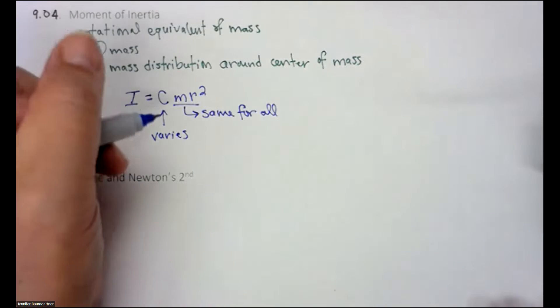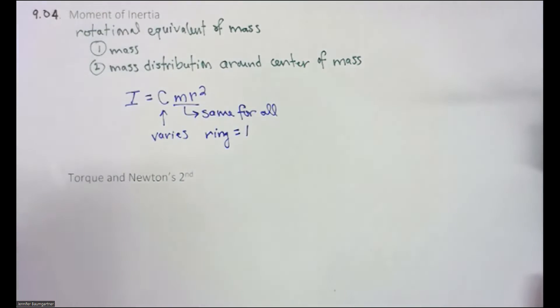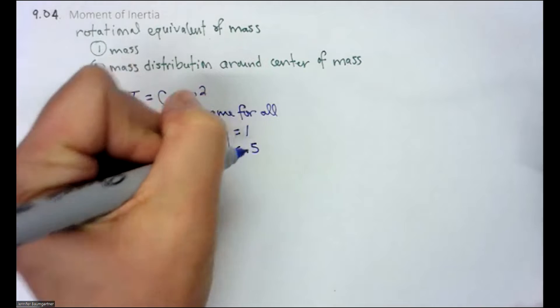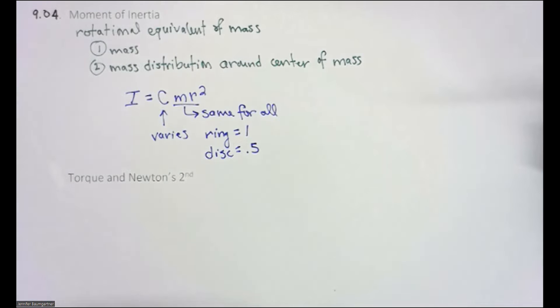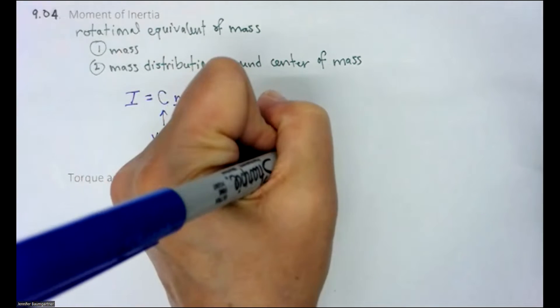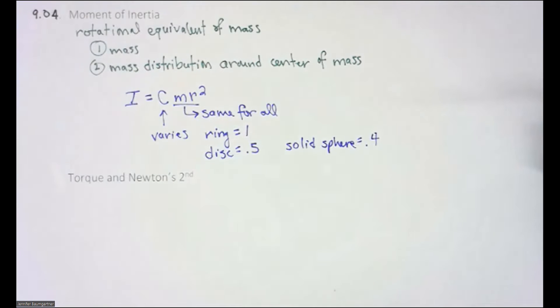But what we see is this constant varies depending on the object. So for a thin hoop or a ring, the constant is one. For a solid disc, the constant is 0.5. And for a solid sphere, the value is 0.4.